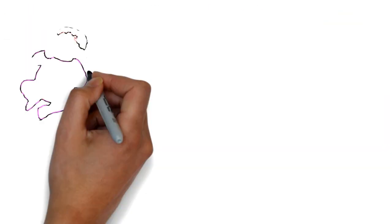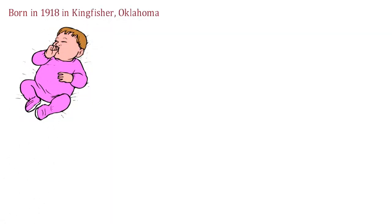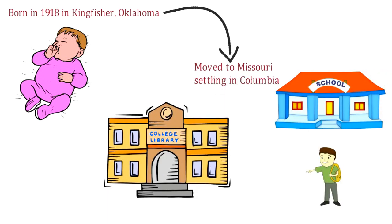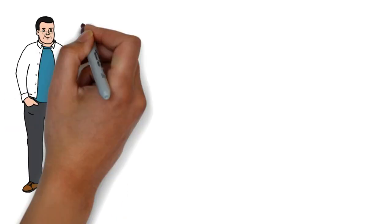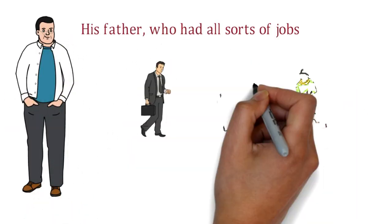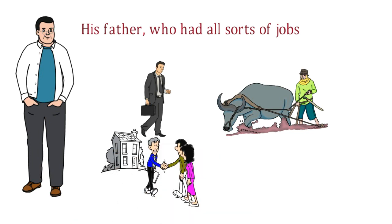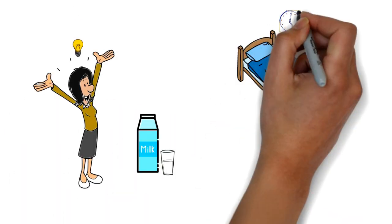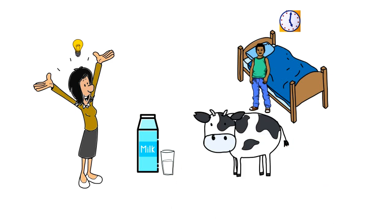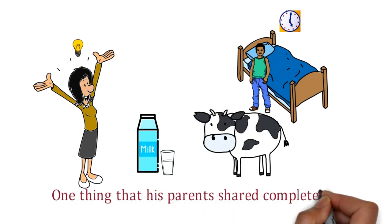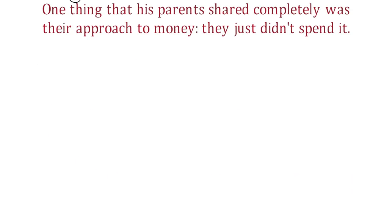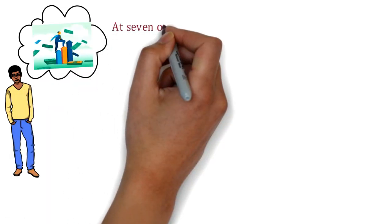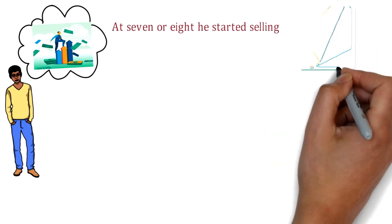Sam Walton was born in 1918 in Kingfisher, Oklahoma, and at five his parents moved to Missouri, settling in Columbia where he finished high school and went to college. His father had all sorts of jobs - banker, farmer, farm loan appraiser, agent for insurance and real estate - and was a hard worker and good negotiator. His mother started a little milk business, so the boy got up early to milk the cows and deliver the milk. One thing his parents shared completely was their approach to money - they just didn't spend it. The boy grew up during the Great Depression, which taught him to value a dollar. Sam had always sold things - at seven or eight he started selling magazine subscriptions and had paper routes from seventh grade through college. He raised and sold rabbits and pigeons too.